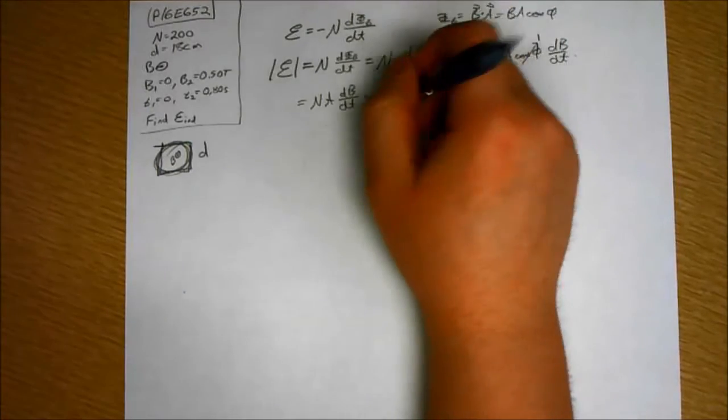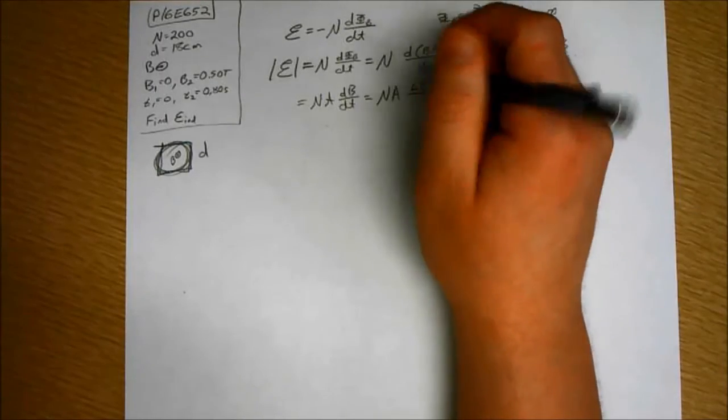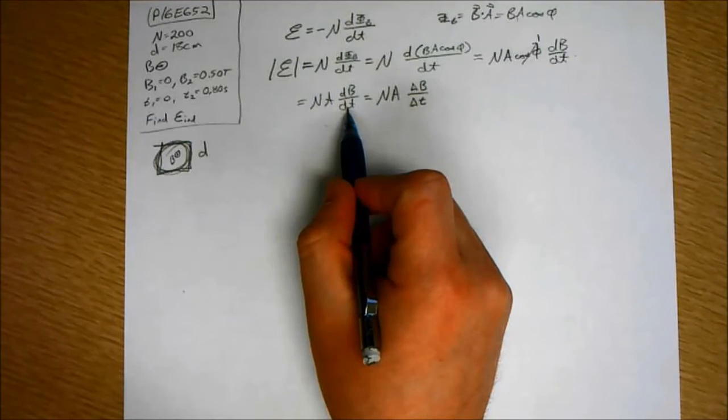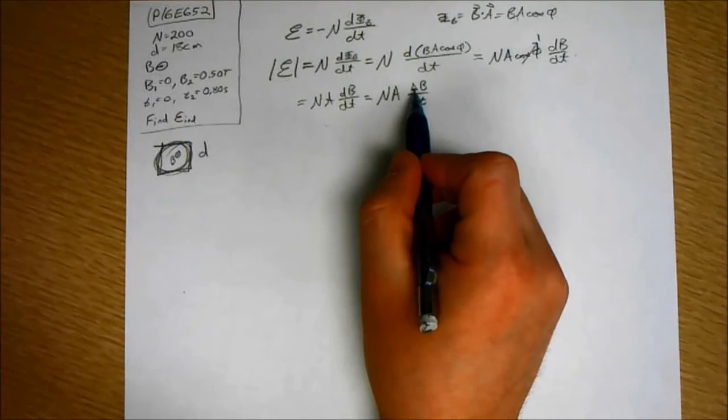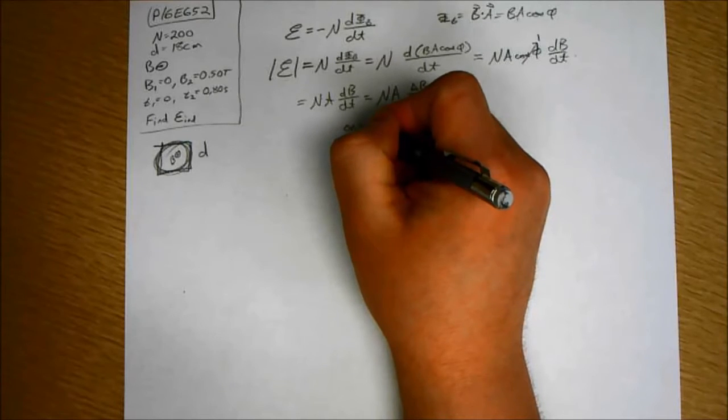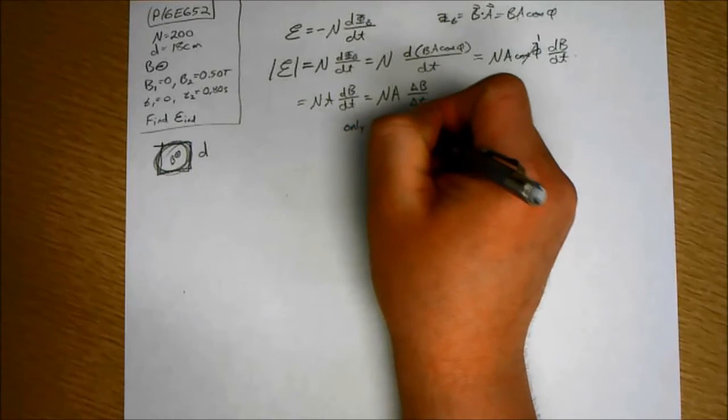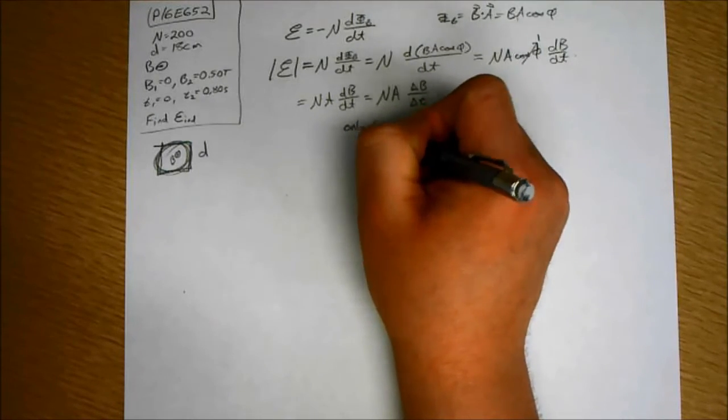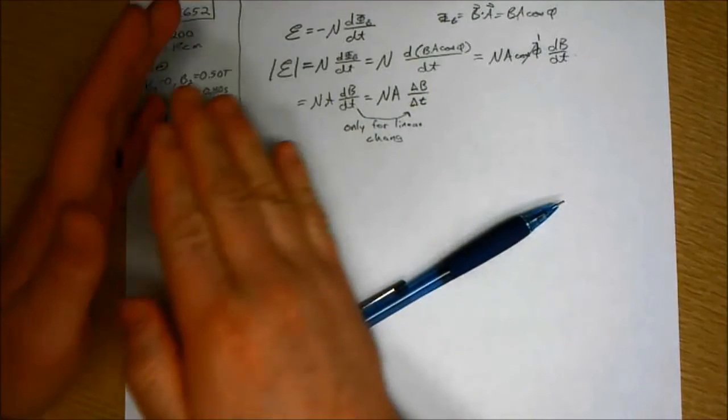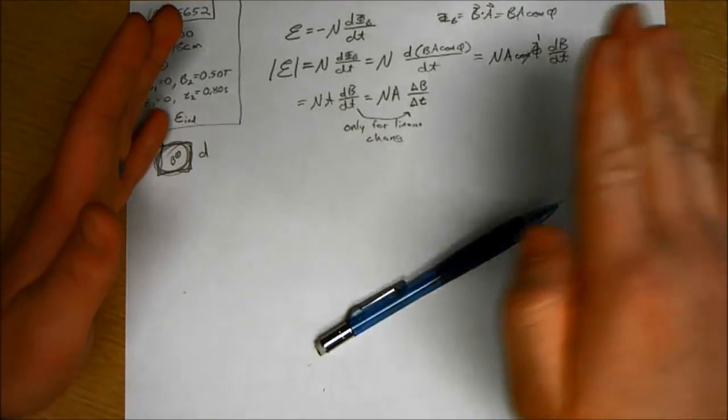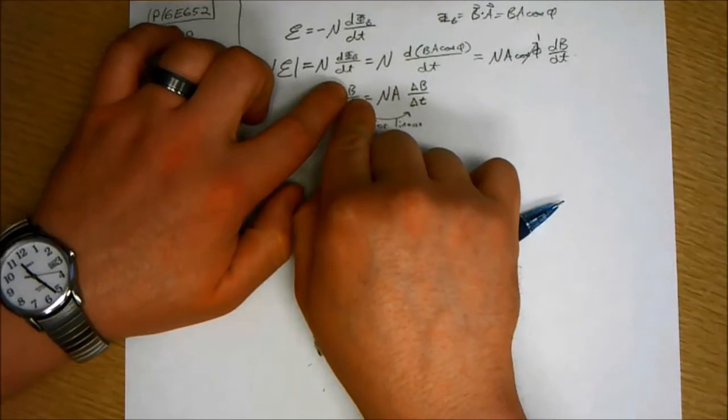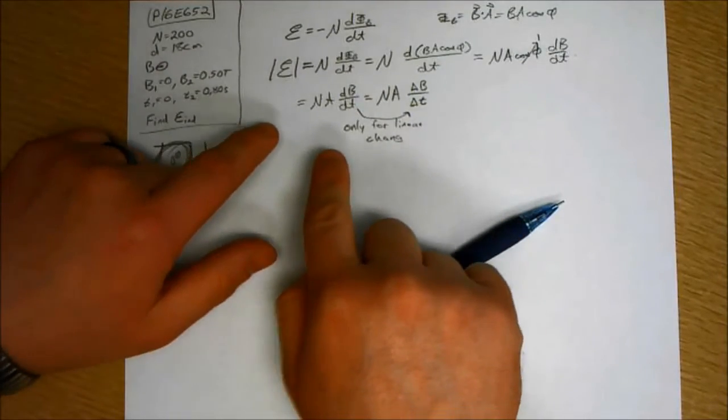So you can say that the derivative of B with respect to T is the same as delta B, delta T, if it changes in a linear manner. Linear change. If, for example, the magnetic field ramps up really quickly and then kind of levels off, you know, levels off a little bit, well then we need the function. We need the function of, we need B as a function of T and we have to differentiate that function.